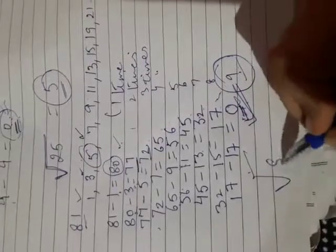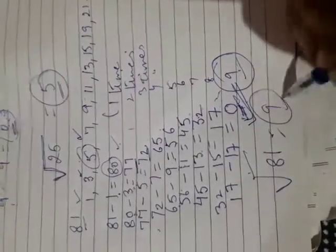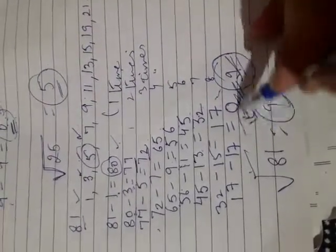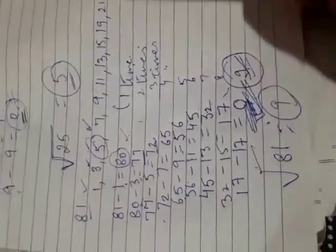What is the square root of 81? 9. Why is it 9? Because after 9 times we got answer 0. Clear it is.